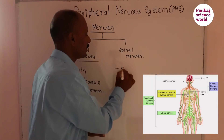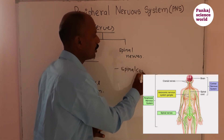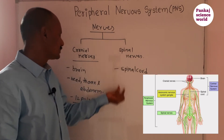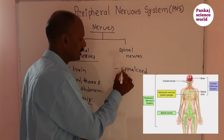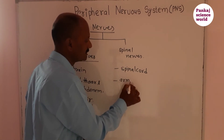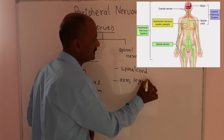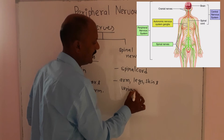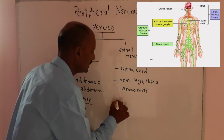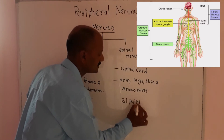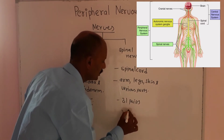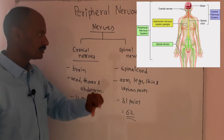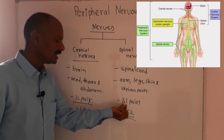Spinal nerves are connected with the arms, legs, skin, and various parts of our body. There are about 31 pairs of spinal nerves, therefore in total there are 62 spinal nerves.